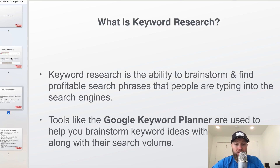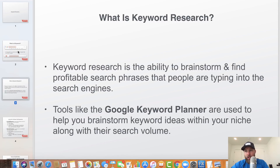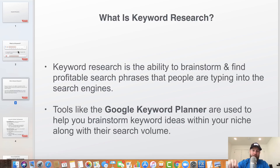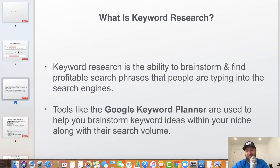You can use tools like the Google Keyword Planner or keyword tool.io, which is a paid tool, and they're used to help you brainstorm keyword ideas within your niche along with their search volume. If you want to learn how to do keyword research the right way, I will link up a video in the top right or left-hand corner. Go ahead and click that — you can learn more about keyword research and how to perform it correctly using what I like to call YouTube instant search.